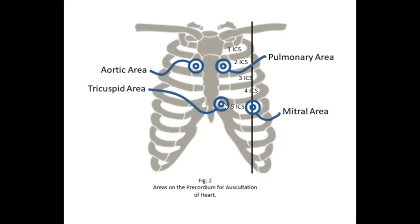The tricuspid valve has three leaflets that keep the valve closed. The tricuspid valve auscultation area is at the fourth to fifth intercostal space — most of the time closer to the fifth — left of the sternal border.